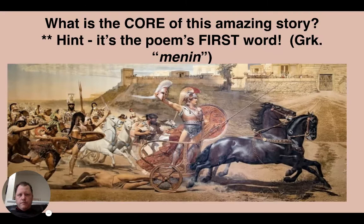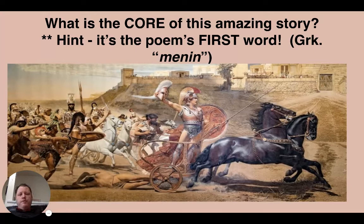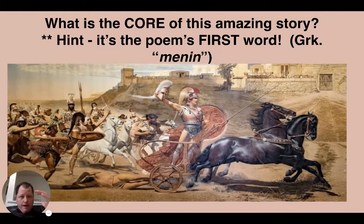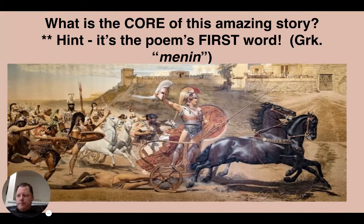The core of the Iliad is seen in the poem's first word — not usually first in translations, but first in Greek: menin, which is rage or anger. This poem is about the anger and rage of its central character, Achilles. Early on, his commander Agamemnon took his favorite prize from him, a woman named Briseis. At that point Achilles went to his tent and refused to fight in the Trojan War.